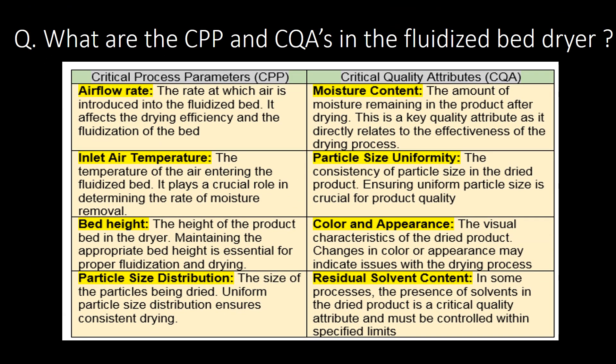What are the CPPs and CQAs in a fluidized bed dryer? Critical process parameters (CPPs) include air flow rate, inlet air temperature, bed height, and particle size distribution. Critical quality attributes (CQAs) include moisture content, particle size uniformity, color and appearance of granules, and residual solvent content.